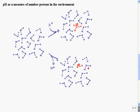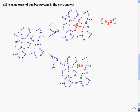The measure of the amount of protons in an environment is the concentration of H3O-plus. We use the shorthand H-plus for this — it's a little sloppy to write the concentration of H-plus when H-plus in water really lives as H3O-plus, but it's very common notation so we'll use it in this course. The other thing that's interesting in water with regards to the amount of protons is the amount of OH-minus. So the two things that measure the amount of protons in the environment are the concentration of H3O-plus and the concentration of OH-minus.